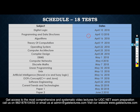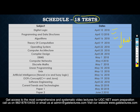Now you can see the schedule. For the 18-test package, the first test is digital logic, the second is programming and data structures on 13th April, algorithms on 16th April, and so on. These are publishing dates — meaning the tests will be available from these dates onwards, and you can attempt them at any time before the 8th July examination.